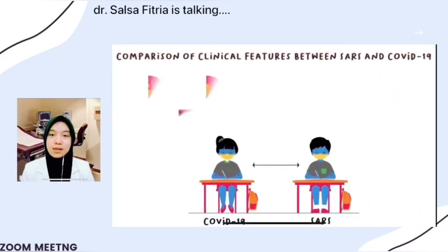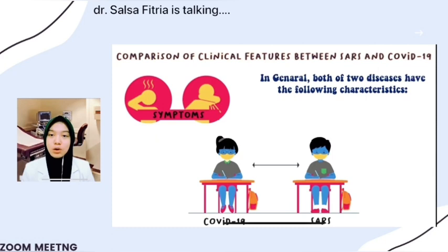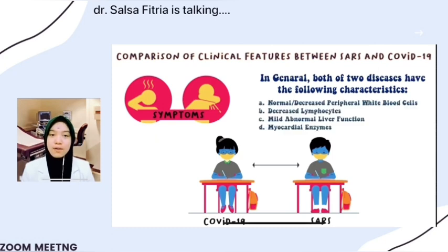The most common symptoms of these two diseases were fever and cough, and the majority of children have a good prognosis. Children with COVID-19 exhibit less fever and were more asymptomatic. Younger children, especially newborns affected by COVID-19, had a poor outcome, which was different from children with SARS, where increased age predicted a worse outcome. In general, both diseases share the following characteristics: normal or decreased peripheral white blood cells, decreased lymphocytes, mild abnormal liver function, and abnormal myocardial enzymes. However, children infected with COVID-19 showed higher CRP, which is different from children with SARS.